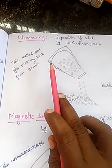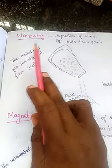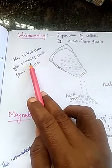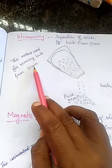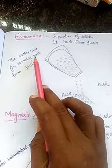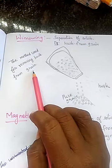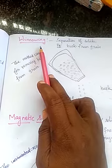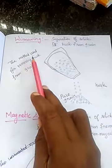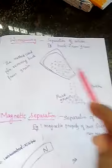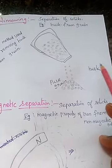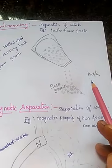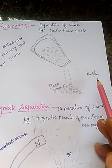Another separation technique is winnowing. What is winnowing? The method used for removing husk from grain. Husk is very light impurity particles.